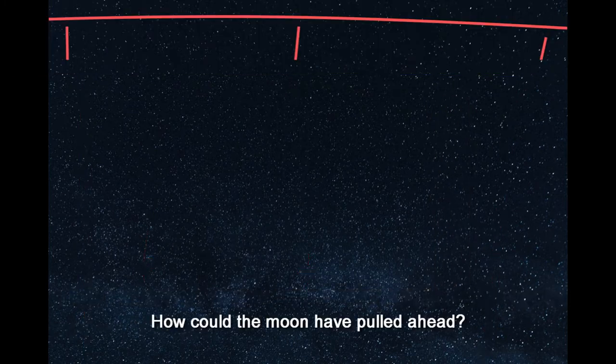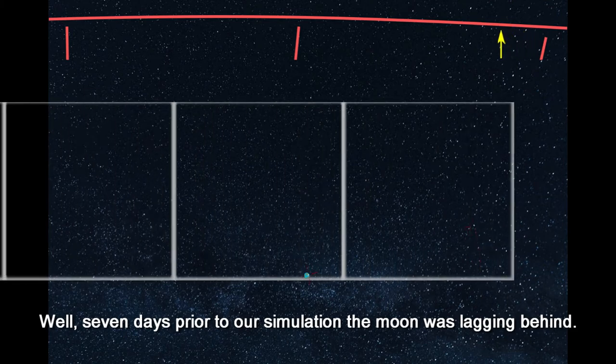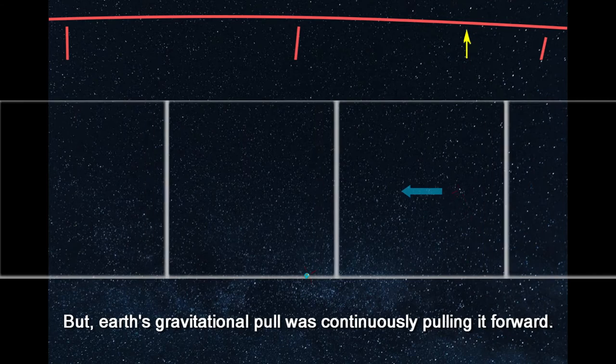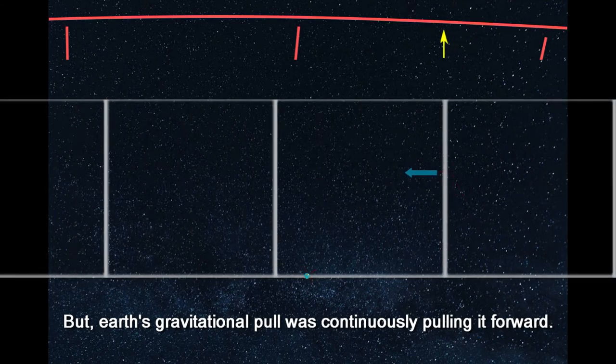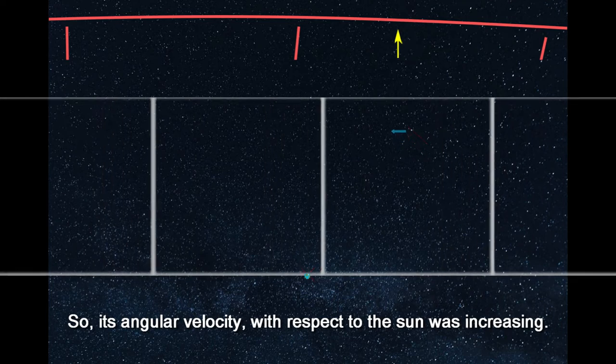How could the Moon have pulled ahead? Well, seven days prior to our simulation, the Moon was lagging behind. But Earth's gravitational pull was continuously pulling it forward, so its angular velocity with respect to the Sun was increasing.